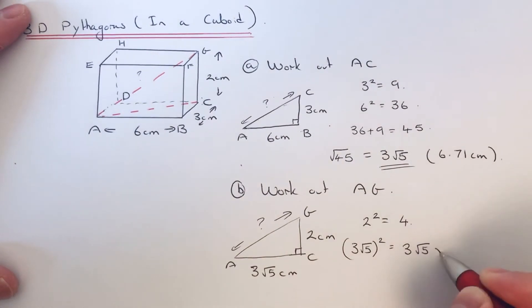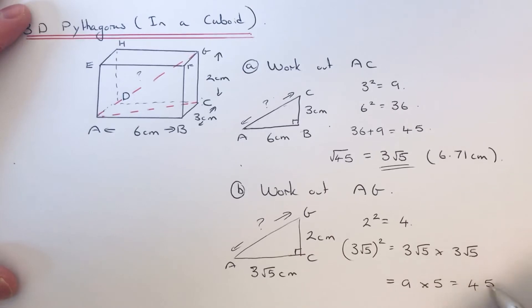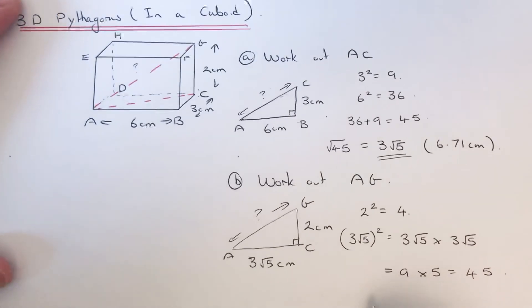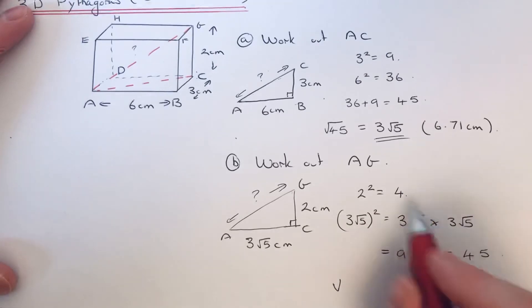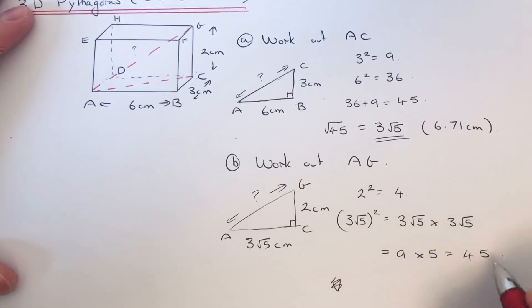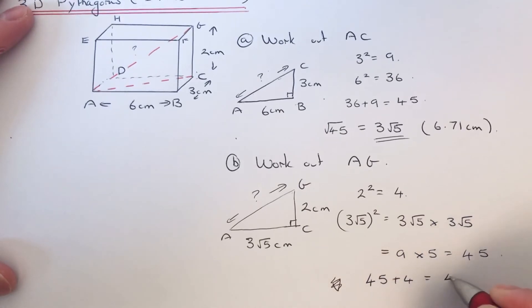I'm going to do this by hand. 3 times 3 is 9, √5 times √5 is 5, 9 times 5 is 45. Then we add these together, so 45 add 4 is 49.